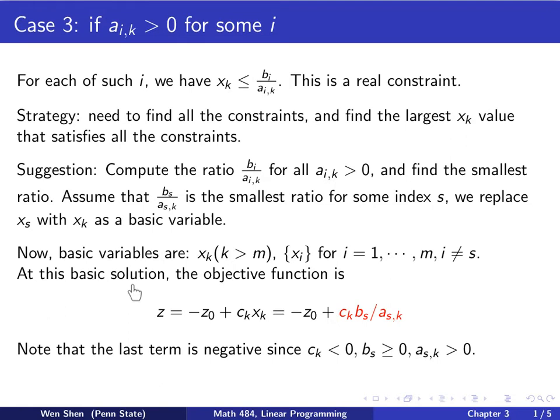At this basic solution, what will be the value of the objective function? We would have z now equal to negative z_0 plus the additional value c_k x_k, and we know x_k is taking the value b_s over a_s,k. Recall that here c_k is negative, and b_s and a_s,k are positive. So this red term is actually negative, which will make the z value decrease by that amount. We see that this step we took by replacing x_s with x_k as a basic variable actually changes our objective function for the better, that is, z decreases.